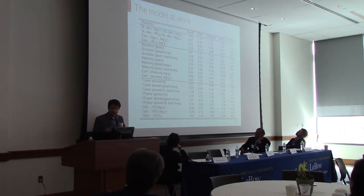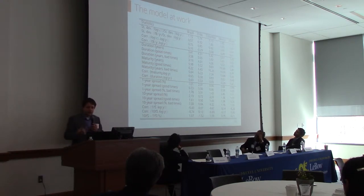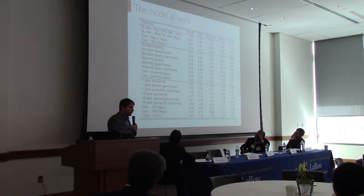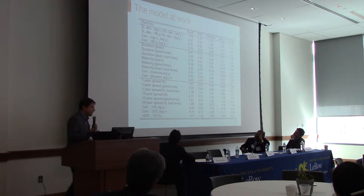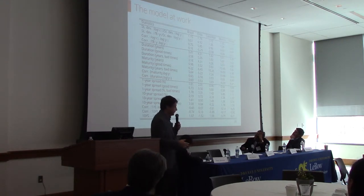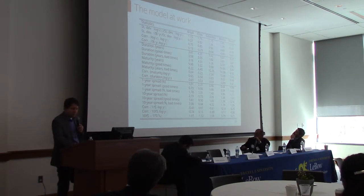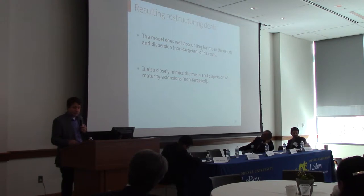This table shows many statistics generated by the model. We think of the model as a laboratory to do different exercises. The model generates many features observed in the data: longer spreads are higher than shorter spreads, spreads are higher in bad times than good times, also procedural duration and maturity, and large variation in consumption relative to income in developing economies.